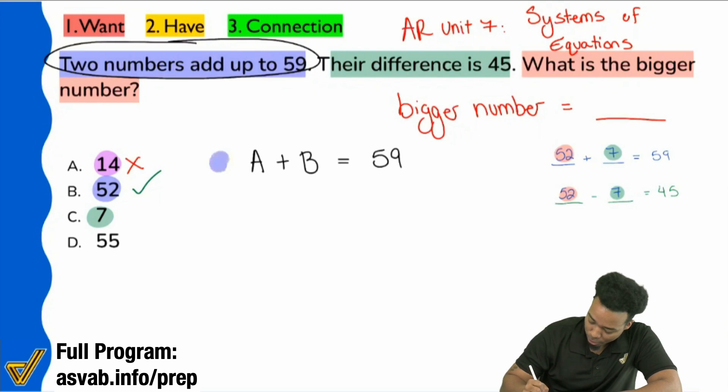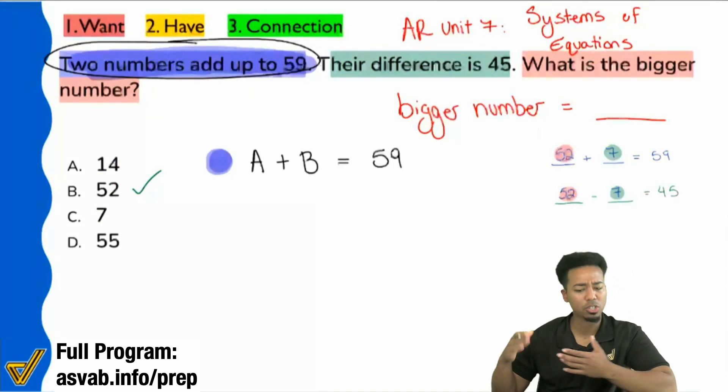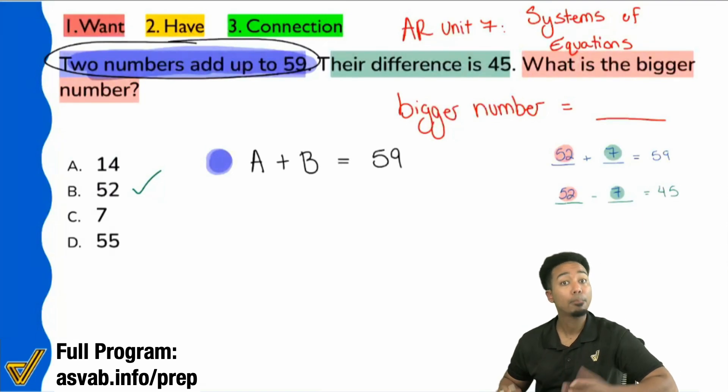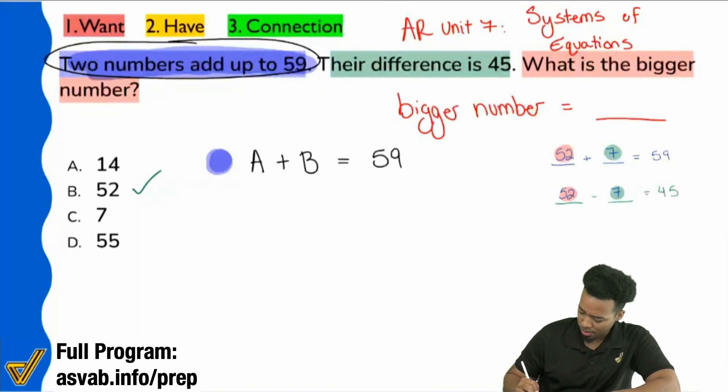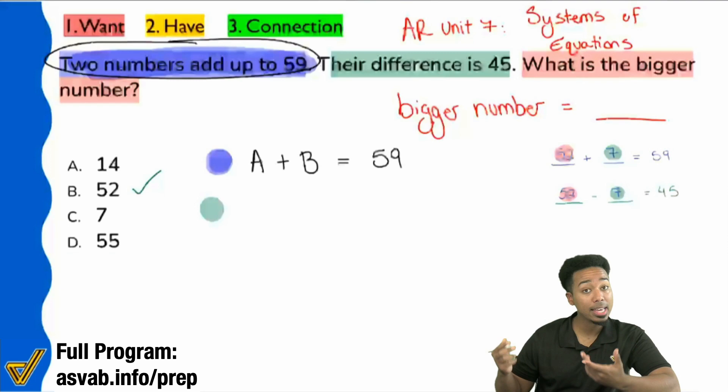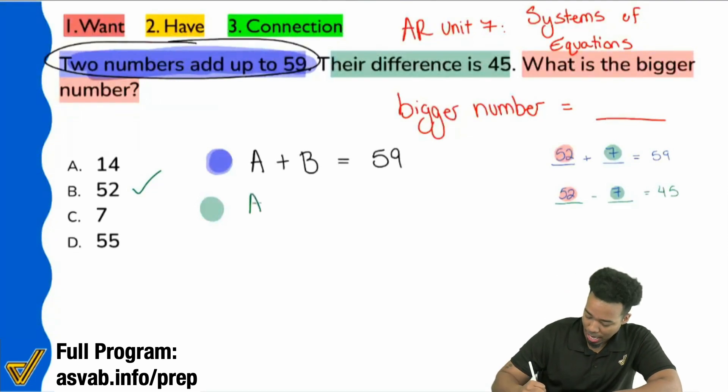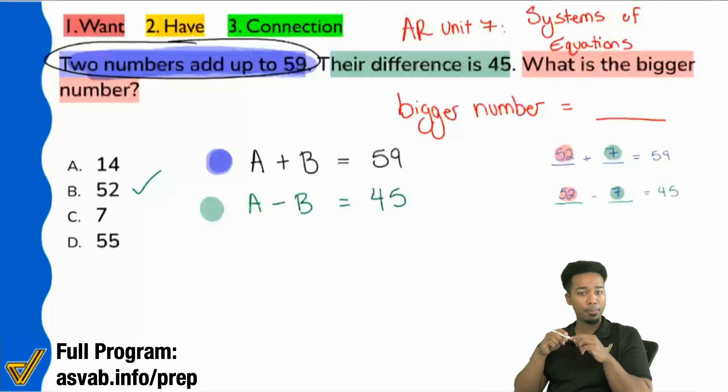So again, A plus B equals 59. Again, that is the first sentence. In blue here, again, the two numbers added to 59. That's just me representing that. Second sentence, it says their difference is 45. So is it fair if I wrote it like this? Let's pretend that A is the bigger number. So if we did A minus B equals 45, would that make sense? Again, A is the bigger number. Does that make sense?